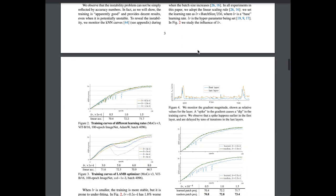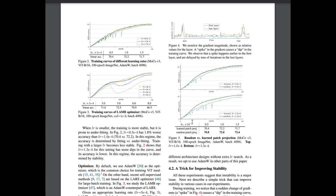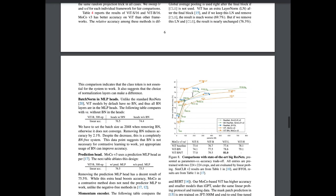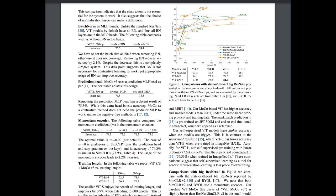The way they solve the instability is by using a fixed patch projection. In the vision transformer, images are split into patches and a learned patch projection converts them into vector embeddings, which are concatenated into the transformer input. Instead of learning that projection from 16×16 patches into vector space, they use a random fixed projection, which improved performance. If you're interested, there are many ablations examining applying the vision transformer for contrastive self-supervised learning in this modified momentum contrastive encoder framework.